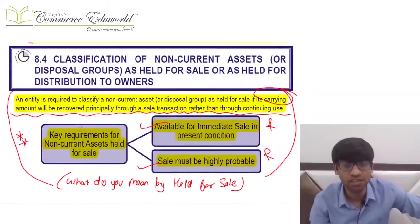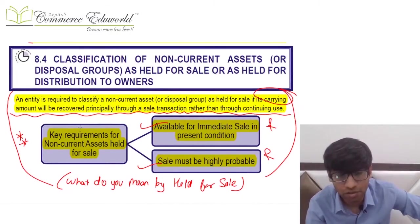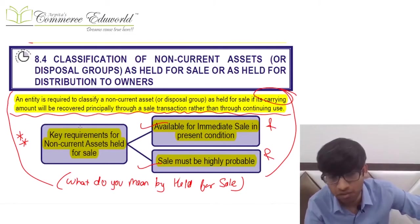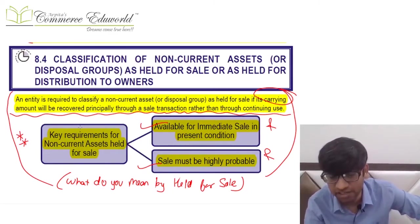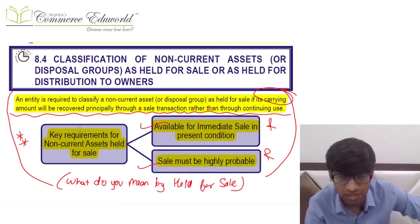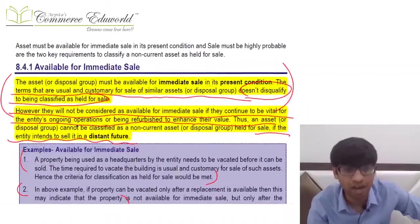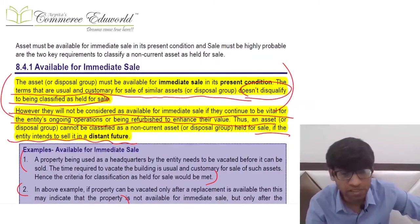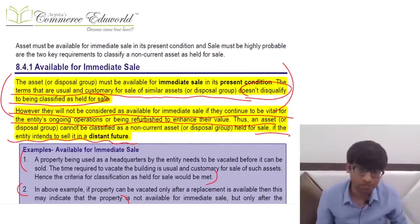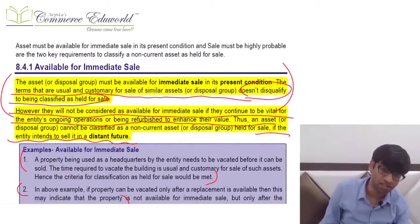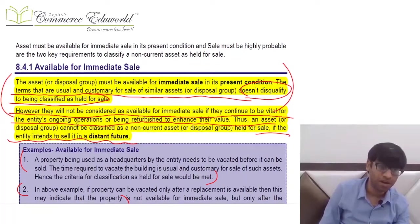When there is a non-current asset or disposal group held for sale, the carrying amount is going to be recovered principally through sale rather than use. A non-current asset or disposal group is held for sale when it is available for immediate sale in its present condition and the sale is highly probable. Available for immediate sale means it should be directly available for sale — not vital for ongoing operations and not being refurbished before sale.